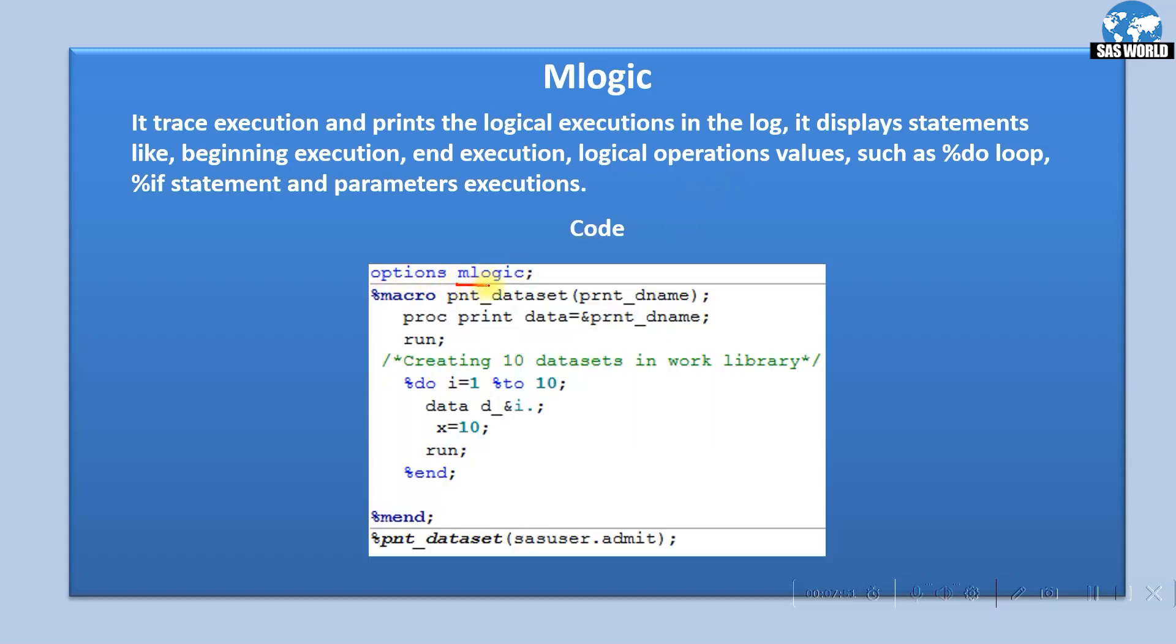This is the program. Here we are using the mlogic option and creating a macro pnt_dataset. We are passing prnt_dname variable that will contain a dataset name. Then we have a proc print that is simply printing the dataset. In these statements, we are creating 10 datasets using a percent do loop running from one to 10. In the data step, the dataset name is d underscore then the i macro variable. So the datasets created would be d_1, d_2, d_3, d_4, till 10 datasets. We are assigning value in every dataset, x equals 10, then calling the macro pnt_dataset passing sasuser.admit.